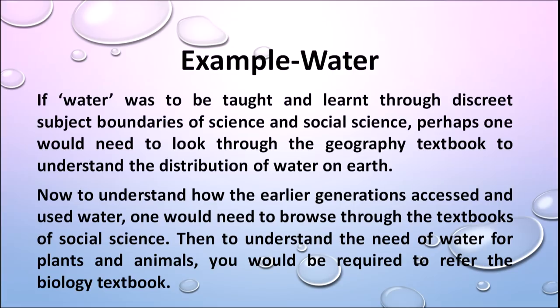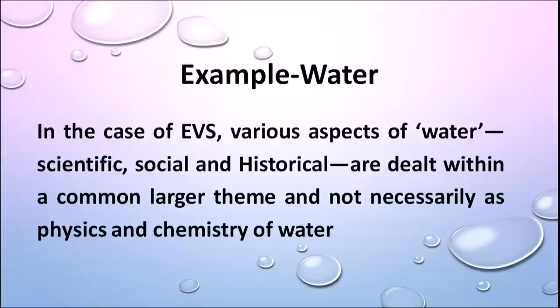Let us take the example of water. If water were taught through discrete subject boundaries of science and social science, one would need to look at geography textbooks to understand water distribution on earth, social science textbooks to understand how earlier generations accessed and used water, and biology textbooks to understand the need of water for plants and animals. But in environmental studies, various aspects of water — scientific, social, and historical — are dealt with within a common large theme.